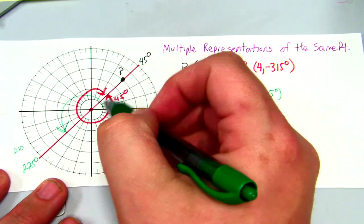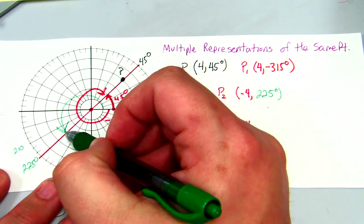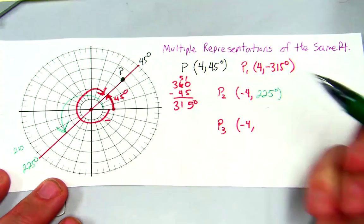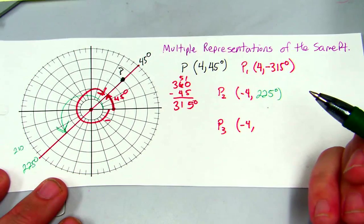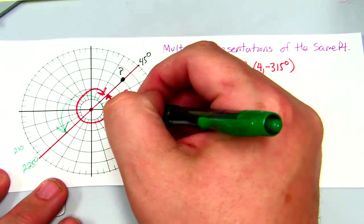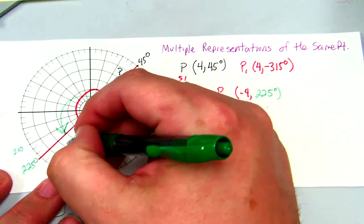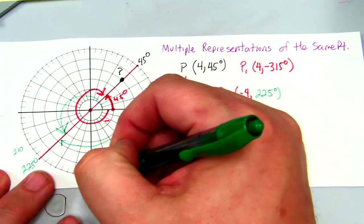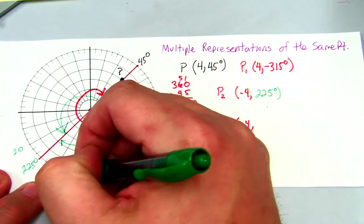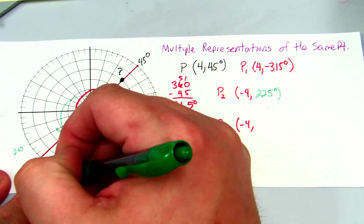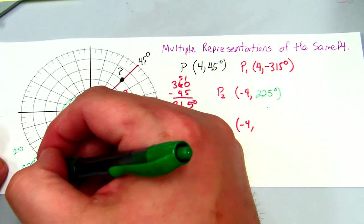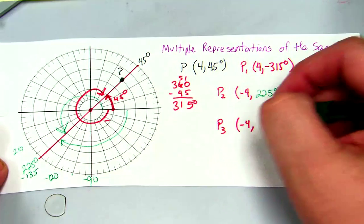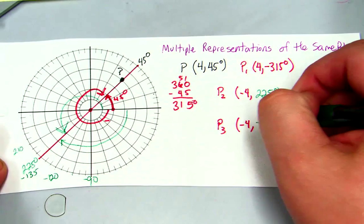So if I go 225 degrees, but then go negative 4, I'm going to get right back to P. But now, if I want this angle right here, that's negative 90, 105, negative 120, that's going to be negative 135, negative 135 degrees.